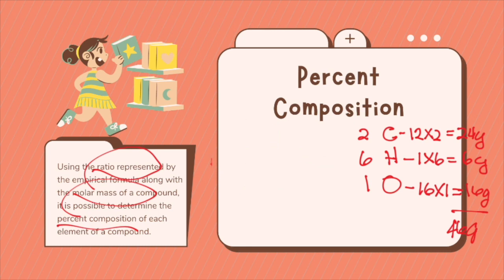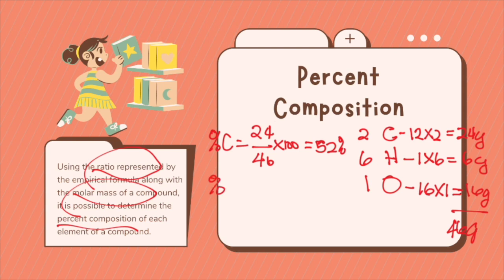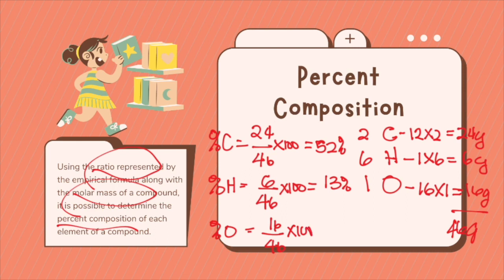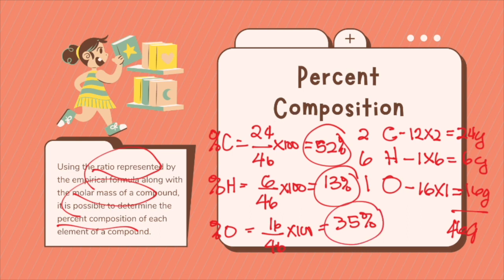For percent carbon, it will be 24 divided by 46 times 100, which equals 52%. Percent hydrogen will be 6 over 46 times 100, which equals 13%. And percent oxygen will be 16 divided by 46 times 100, which equals 35%. So ethanol has 52% carbon, 13% hydrogen, and 35% oxygen.